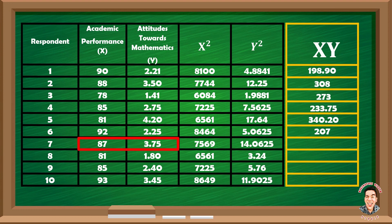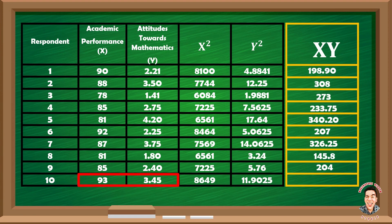Continuing: 87 times 3.75 equals 326.25; 81 times 1.80 equals 145.8; 85 times 2.40 equals 204; and lastly, 93 times 3.45 equals 320.85.